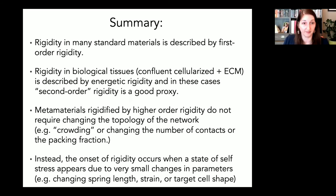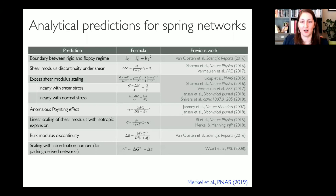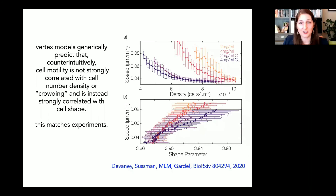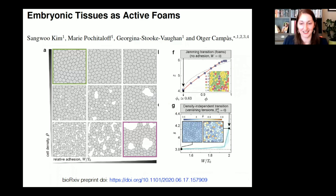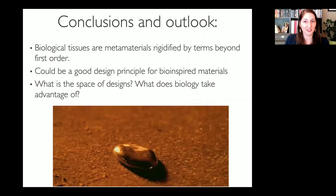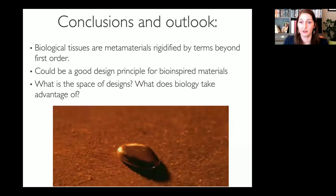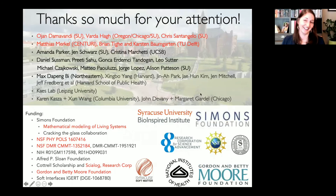Once you do this type of analysis, there's a lot you can predict in experiments. The outlook is that biological tissues as metamaterials rigidified by terms beyond first order could be an exciting design principle for bio-inspired materials. This starts to make you wonder: what is the space of designs, and what does biology take advantage of? Thanks for your attention.